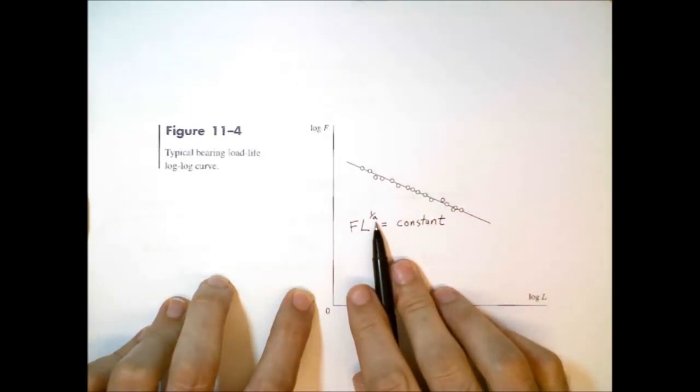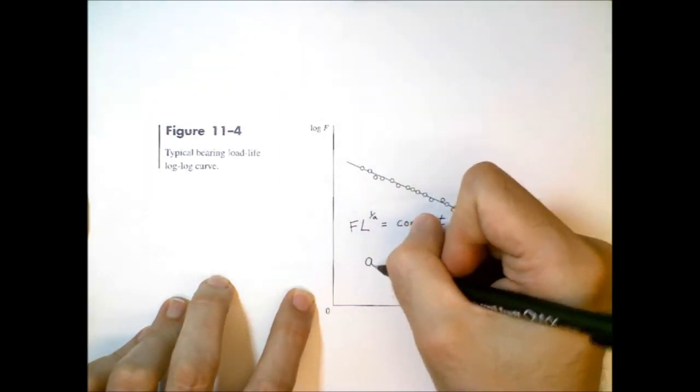Now, this value of A depends on the type of bearing. It's a constant value.